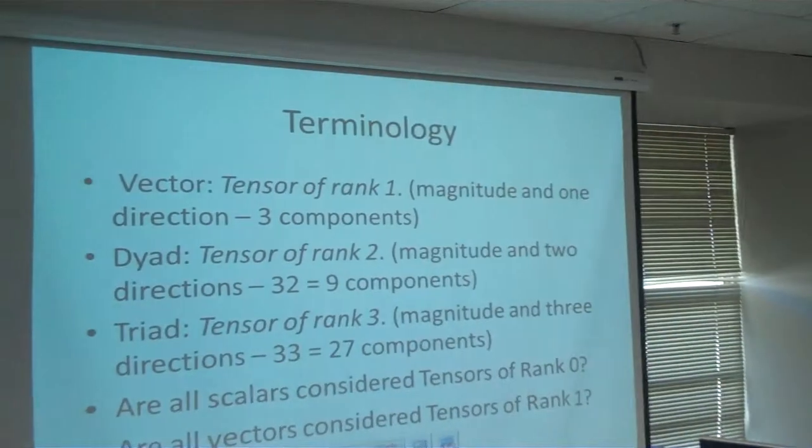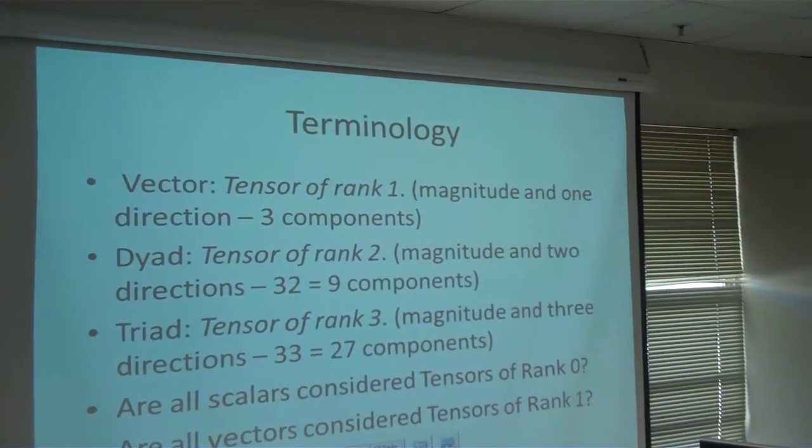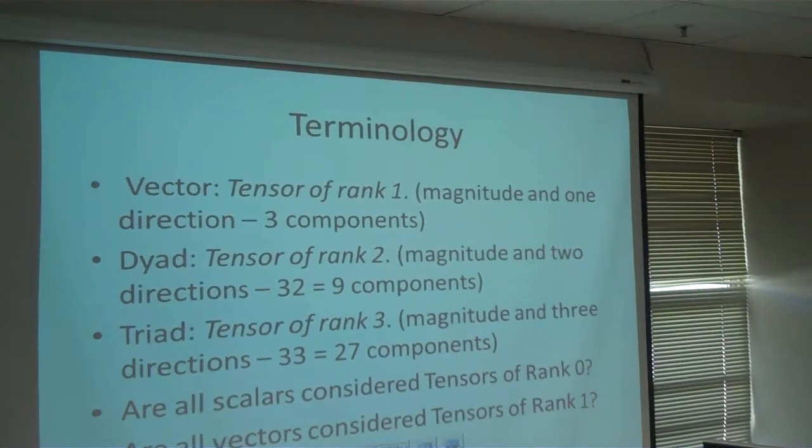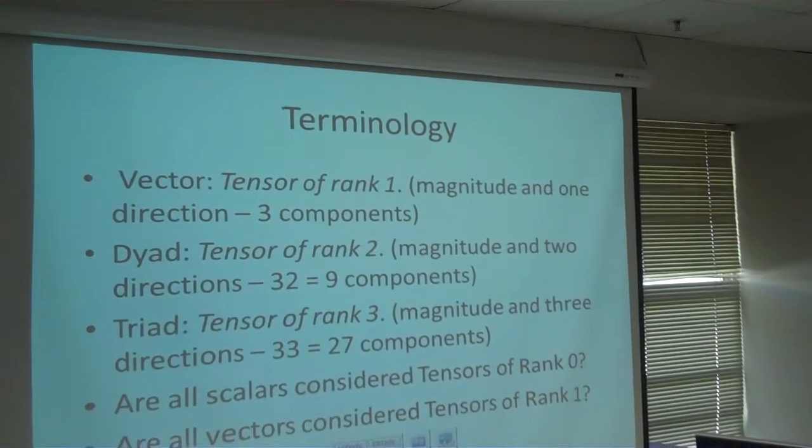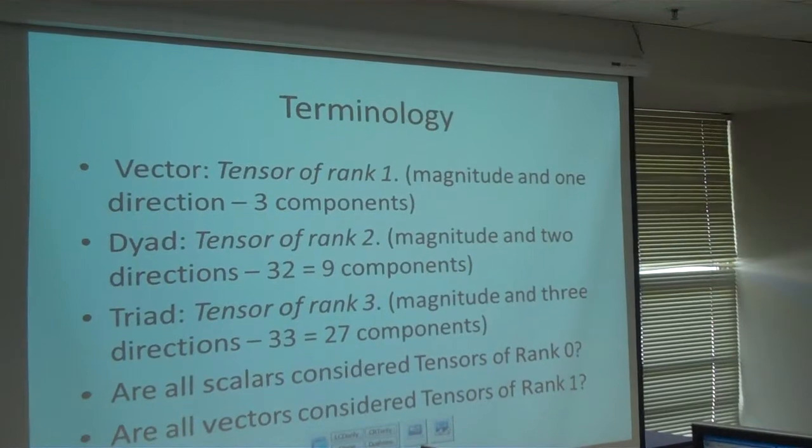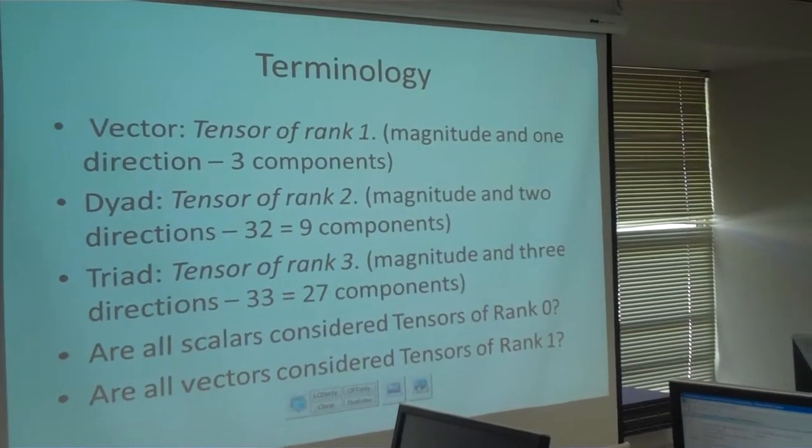Vector, tensor of rank one, it means it has one direction. If it has one direction, it will have three components. Assuming I am talking about Cartesian coordinates, x, y and z.